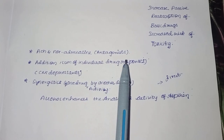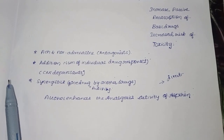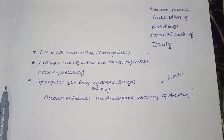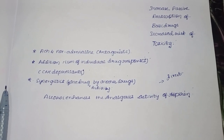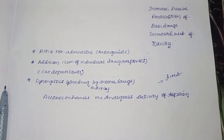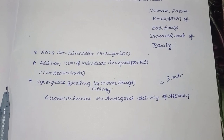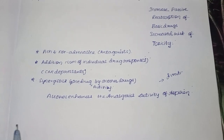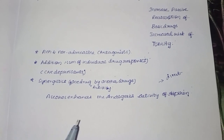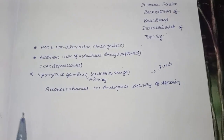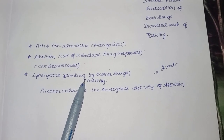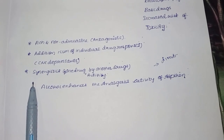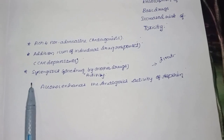The second type is addition, which is the sum of individual drug responses. Both drugs have the same action, and together they produce one combined response. Examples of additive interactions include CNS depressants such as sedatives, hypnotics, barbiturates, benzodiazepines, and phenothiazines.